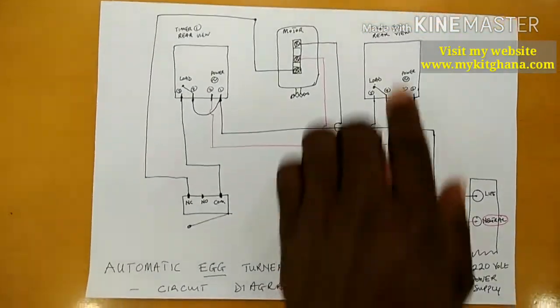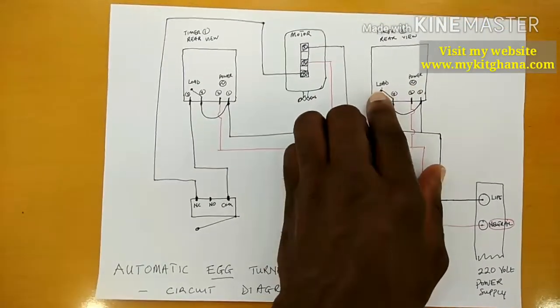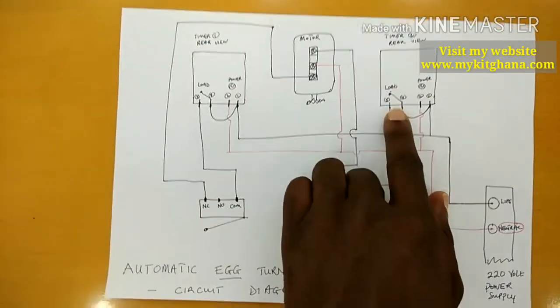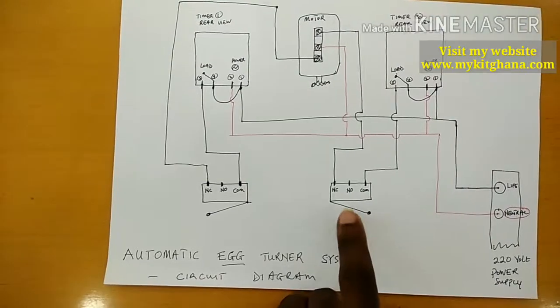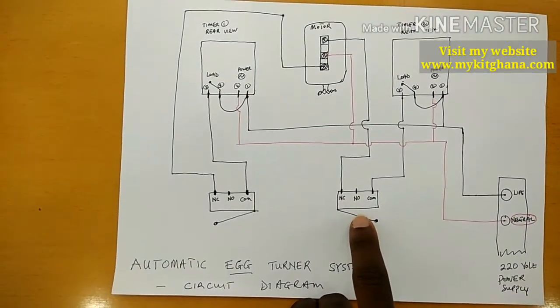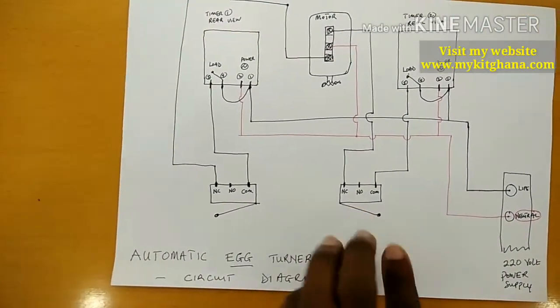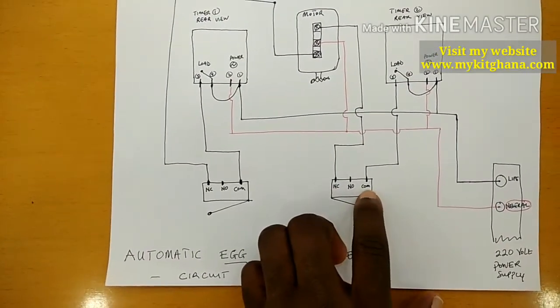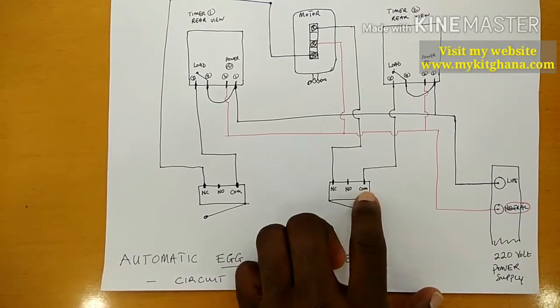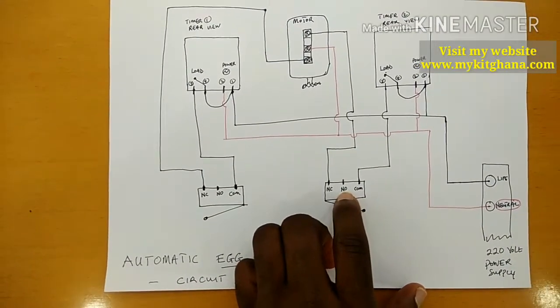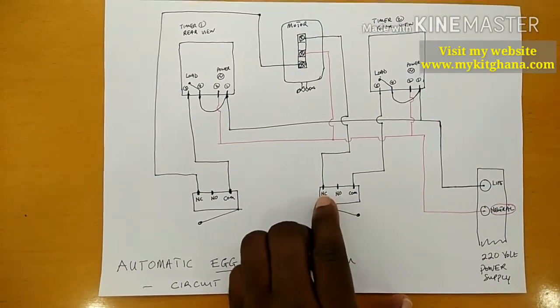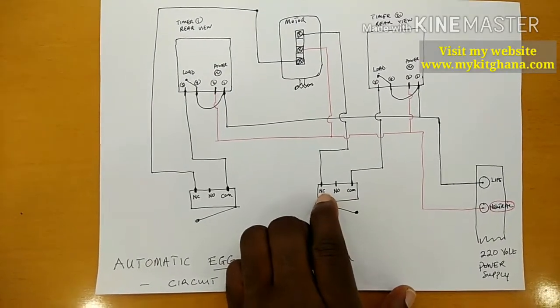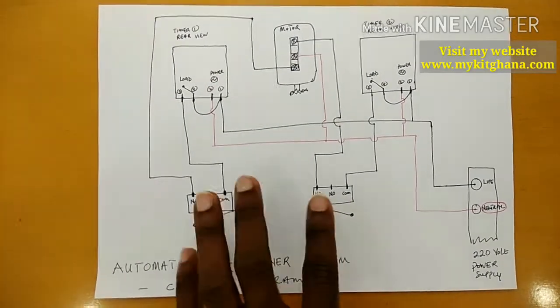We have the power side and we have the load side or the relay side. Over here we have a limit switch. The limit switch has three positions: the common connection, the normally opened connection, and the normally closed connection.